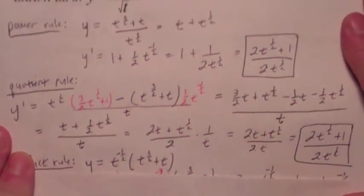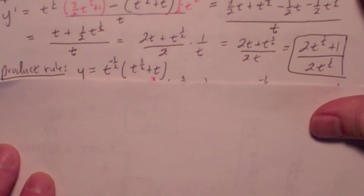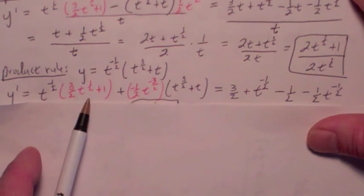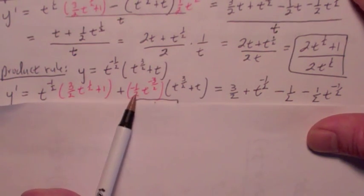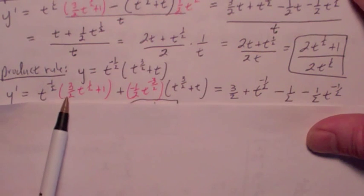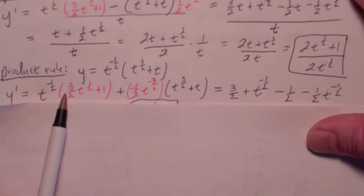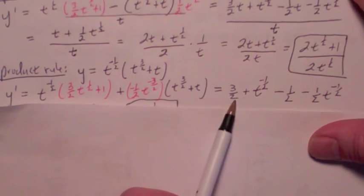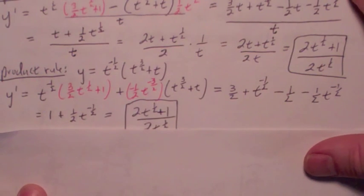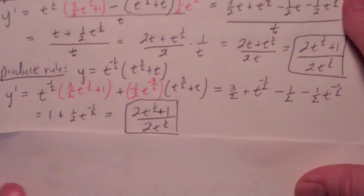You could even use the product rule on this. Move the square root of t on the bottom up to the top and call it t to the negative 1 half. Using the product rule: first times the derivative of the second, where the derivative of the second is 3 halves t to the 1 half plus 1, plus the derivative of the first — which is 1 half t to the negative 3 halves — times the second. When you multiply out, t to the negative 1 half times 3 halves t to the positive 1 half gives 3 halves t to the 0, which is just 3 halves. Continuing gives 3 halves plus t to the negative 1 half minus 1 half minus 1 half t to the negative 1 half. Combining like terms, moving the exponent down, and getting the common denominator gives the same answer. The algebra can get rather intense, but do the homework and you'll be fine.